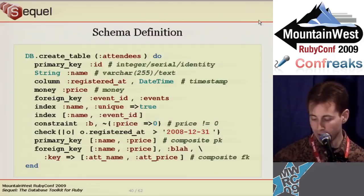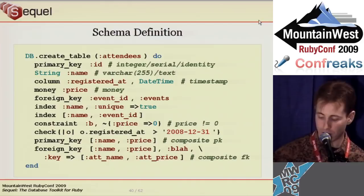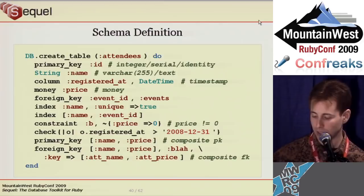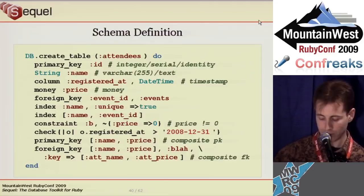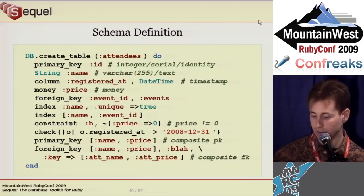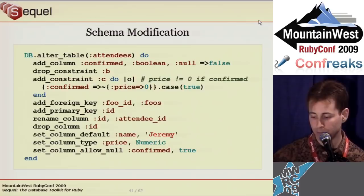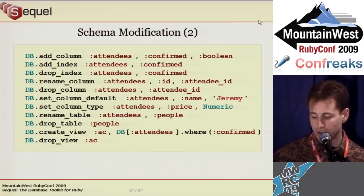You can use Sequel to create and alter tables. Create_table takes a table name and a block, similar to ActiveRecord. You have to explicitly use primary_key if you want one. You can use the column method or method_missing to create columns, and the index method to create indexes. If you use a Ruby class as the type, Sequel uses the most appropriate database type; if you use a symbol, Sequel uses it directly. Sequel encourages database constraints and lets you create them using the check or constraint methods, and encourages real foreign key references. Alter_table is similar — you can add or drop columns, constraints, and indexes, and change a column's name, type, or default.